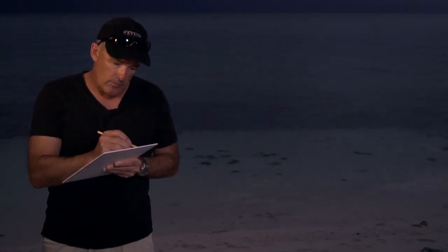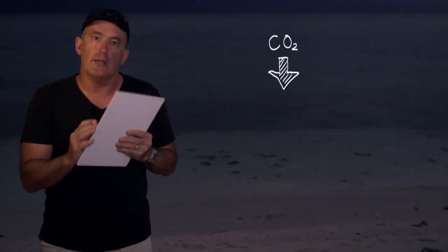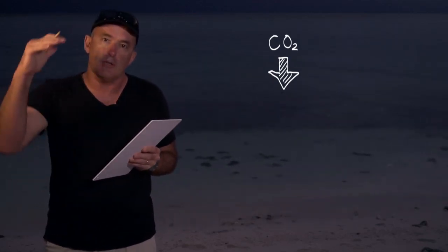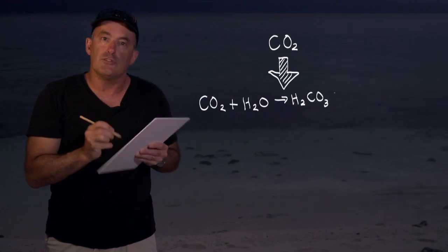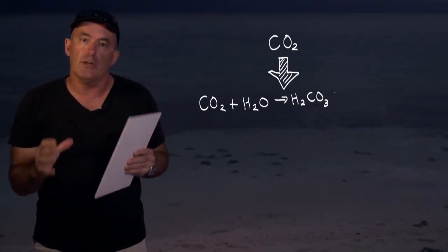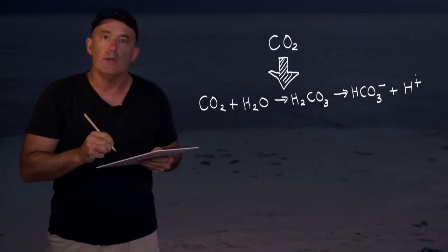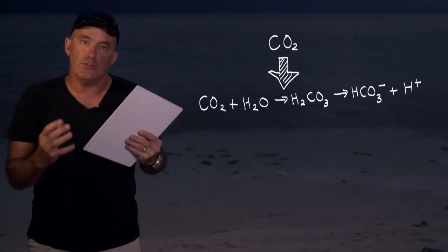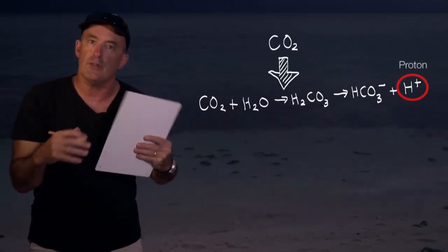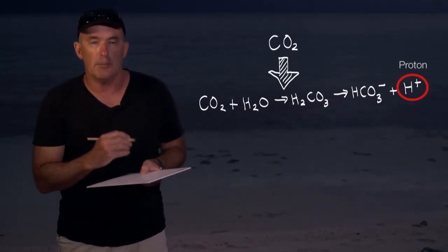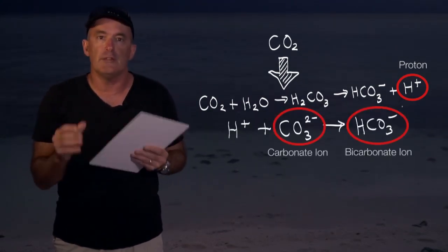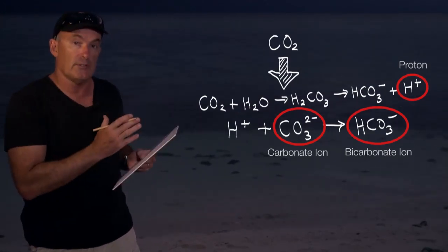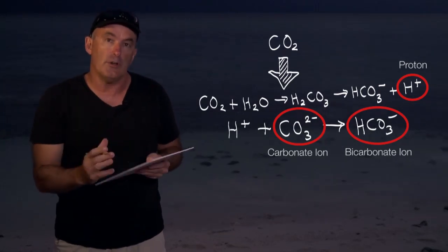Carbon dioxide plays an important role in determining the carbonate chemistry of seawater. As carbon dioxide increases in the atmosphere, more carbon dioxide is entering the ocean. Once carbon dioxide enters the ocean, it reacts with water to create a dilute acid known as carbonic acid. The formation of carbonic acid leads to an increased concentration of protons, and these protons combine with carbonate ions, turning them into bicarbonate ions. The net effect is that the pH and carbonate ion concentration decrease as the concentration of carbon dioxide increases in the solution.